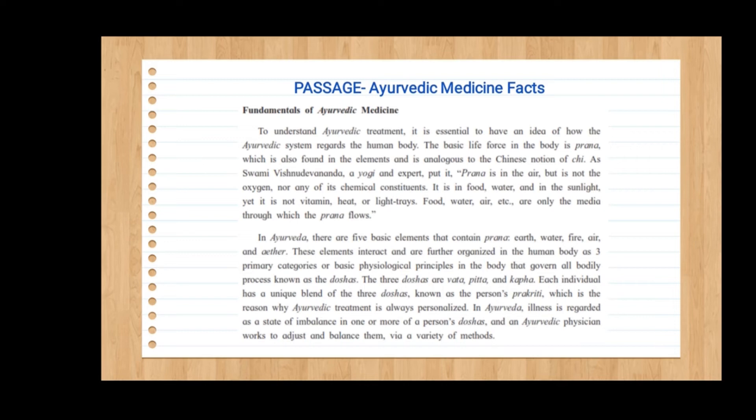As Swami Vivekananda, a yogi and expert, put it: 'Prana is in the air but is not the oxygen nor any of the chemical constituents. It is in the food, water, and in the sunlight. Yet it is not a vitamin, heat, or light rays. Food, water, air, etc. are only the media through which prana flows.' We can jot down for the tree diagram which we have to make — about prana. In Ayurveda, there are five basic elements that contain prana: earth, water, fire, air, and ether.